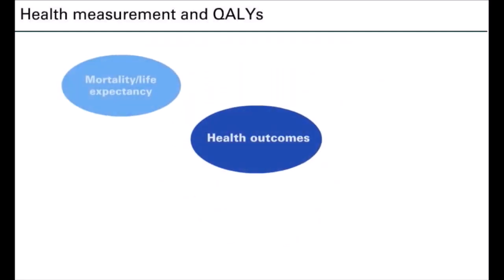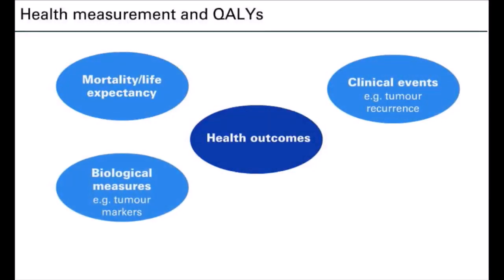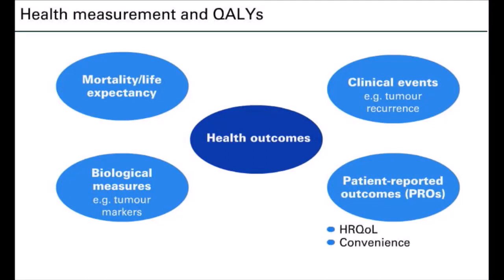Standard clinical measures of outcome may not fully capture all aspects of a patient's health. They look at the physical aspects of a condition but do not consider the patient's perspective. Reports about a health condition or intervention coming directly from the patient, or in certain cases a clinician or carer proxy, are called patient-reported outcomes. These include measures such as health-related quality of life, convenience, symptoms, and treatment preferences.